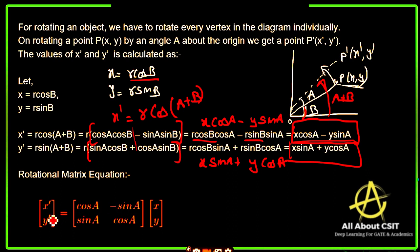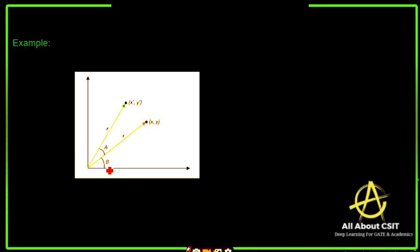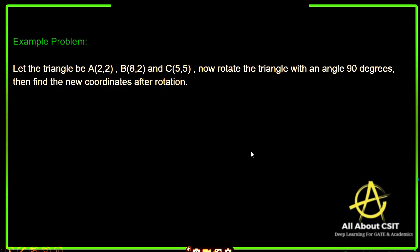The matrix representation is: [x', y'] = [cos(a), −sin(a); sin(a), cos(a)] × [x, y]. This is the old coordinate, and after multiplying we get the new coordinate. The point is rotated using this matrix.